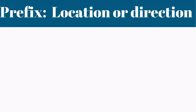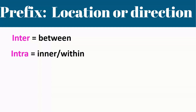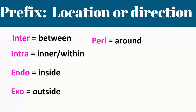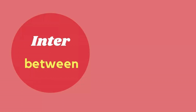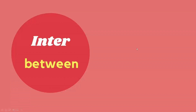Next, prefixes related to location or direction: inter means between, intra means inner or within, endo means inside, exo means outside, peri means around, supra means above or over, sub means below or beneath. The prefix inter means between — examples: interstitial fluid is fluid between cells, intercostal means between ribs.